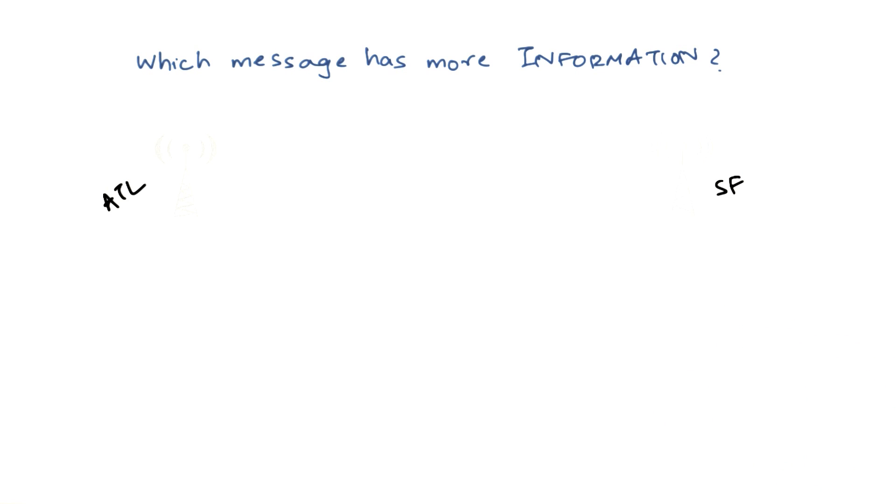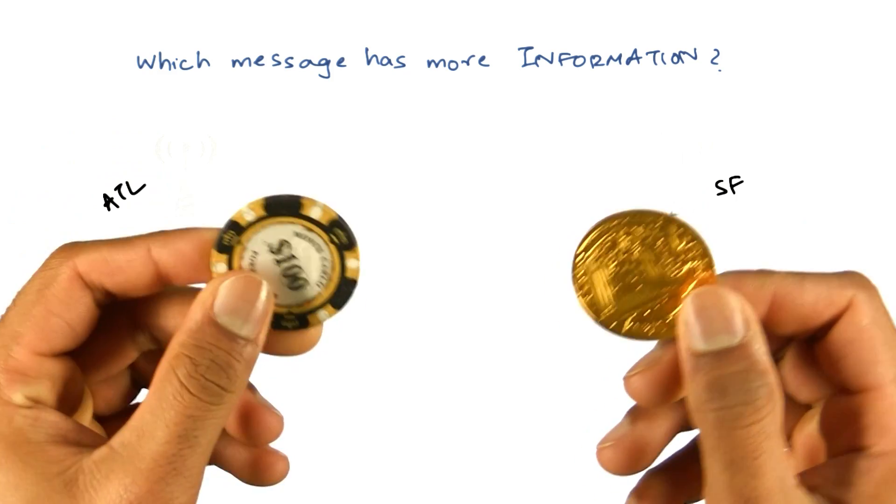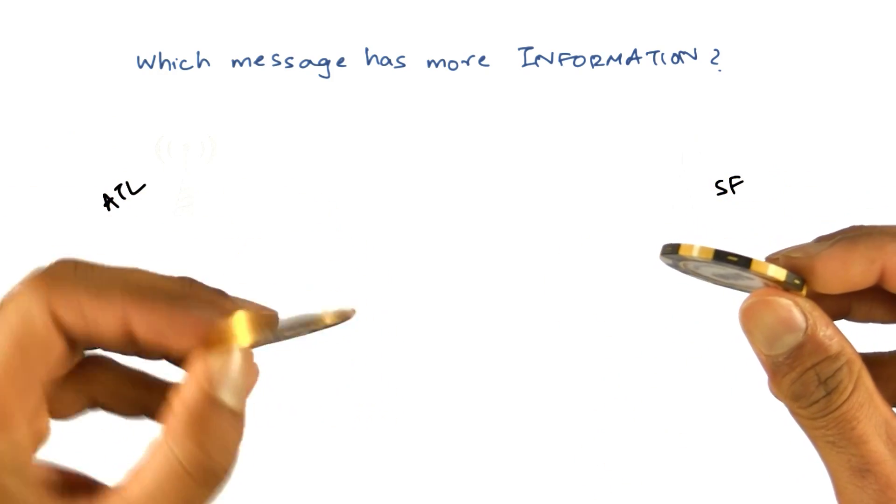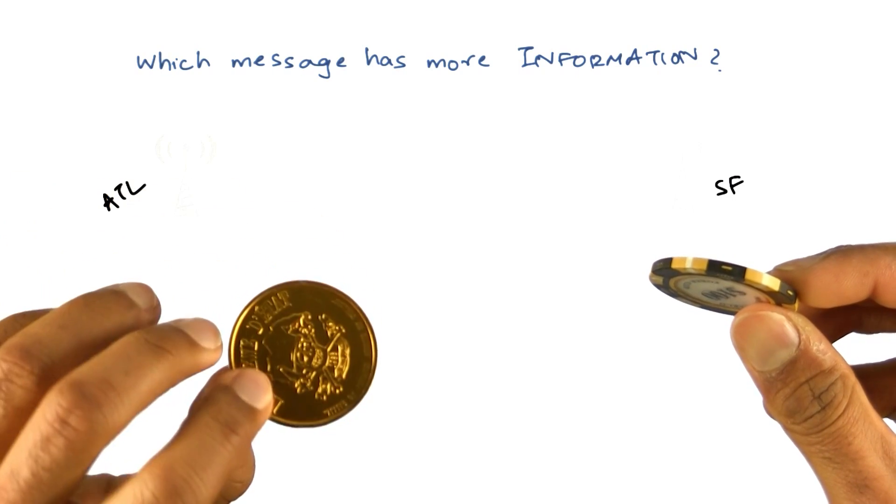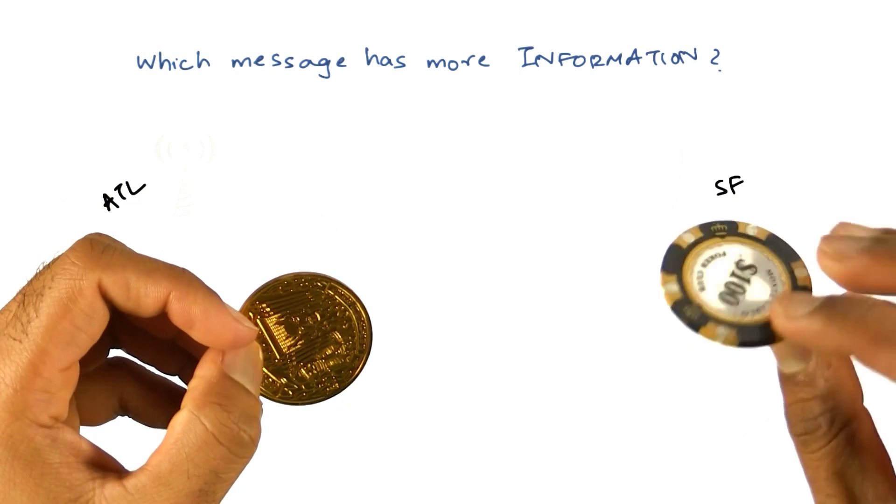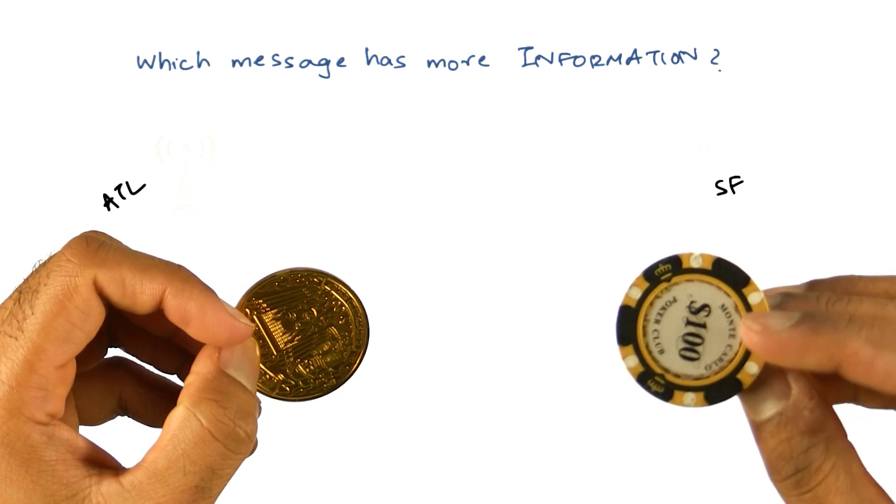Let us construct two messages out of coin flips. Now, I have two coins. But you see these coins are different because this one has a heads and a tails, so two different sides. And this one has both the sides which are very similar looking.